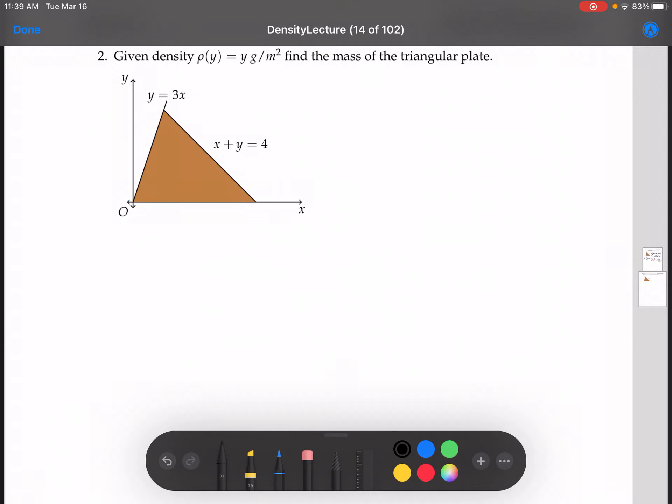In this video we're going to find the mass of this triangular plate. This triangular plate is bounded by the x-axis, the line x plus y equals 4, and the line y equals 3x.